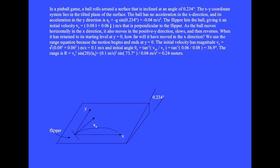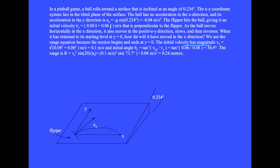In obtaining the range equation, we already took into account the negative sign in the y component of acceleration. So we have r equals v_0 squared times sine 2 theta divided by the absolute value of a sub y. The initial velocity vector has magnitude v sub 0 equals the square root of 0.08 squared plus 0.06 squared, which equals 0.1 meters per second. The initial angle is theta sub 0 equals tan inverse of (v sub y0 divided by v sub x), giving 36.9 degrees. The calculation of the range gives r equals 0.24 meters.